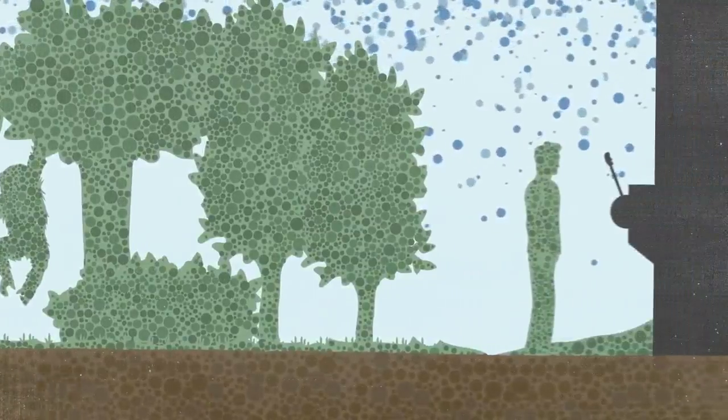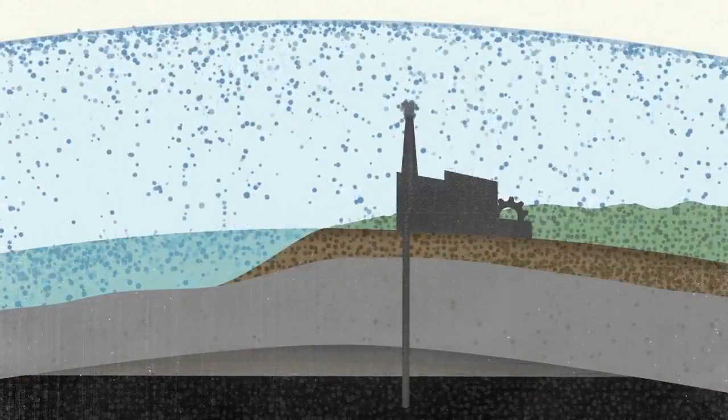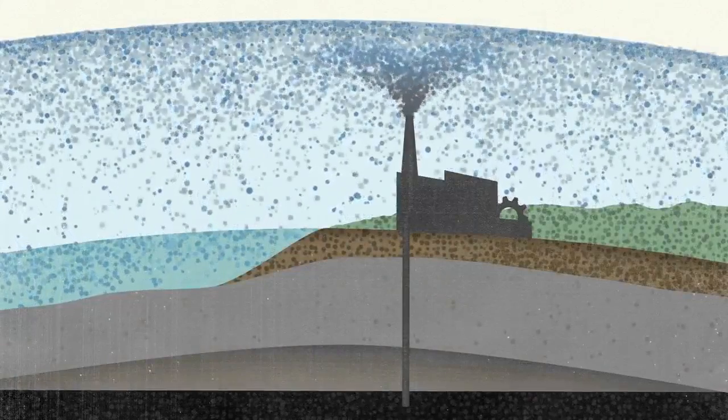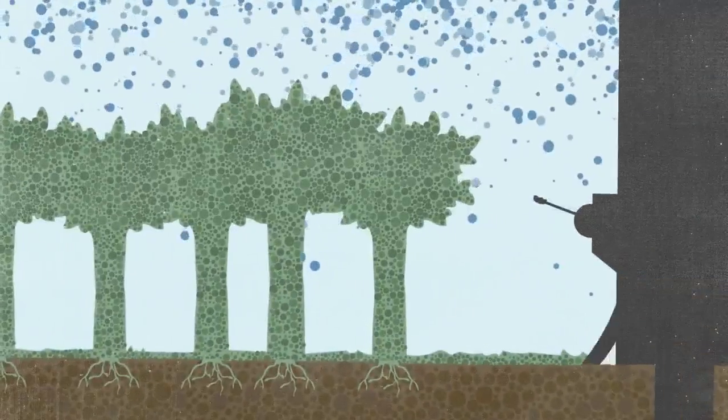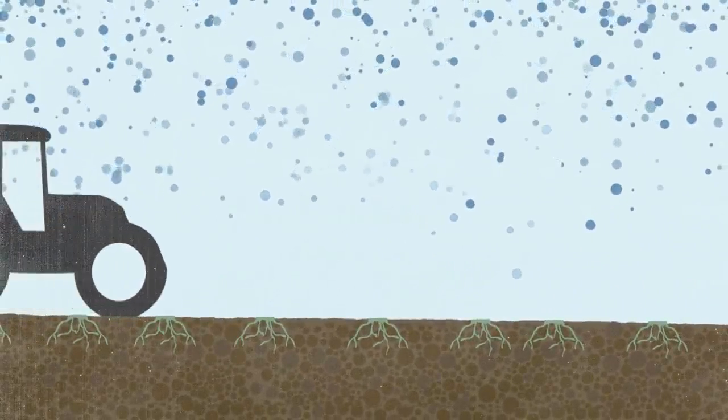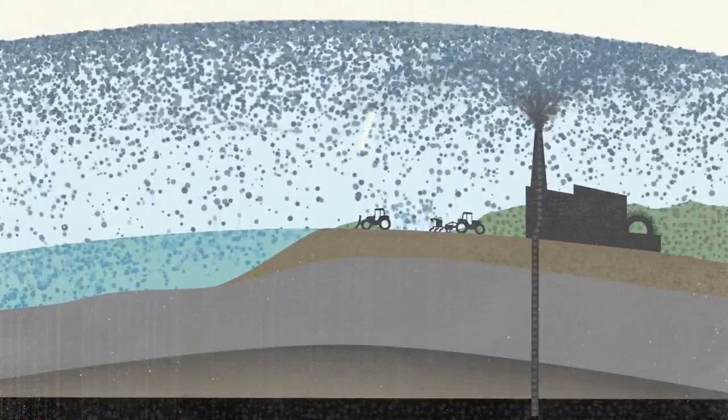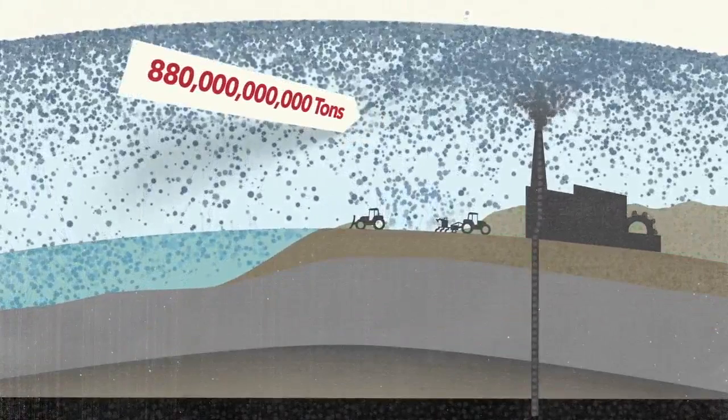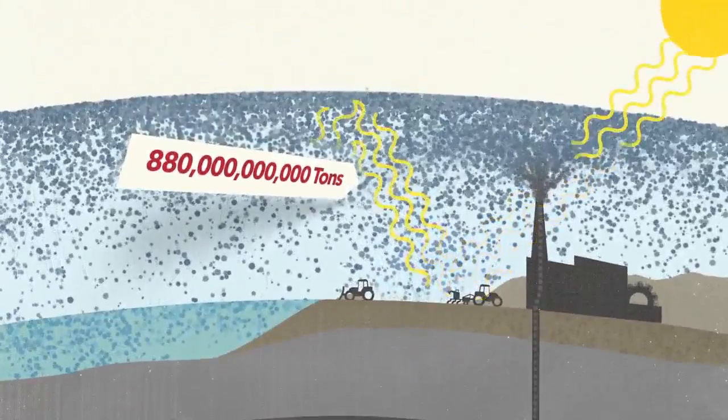Then one life form, that would be us, figured out how to extract carbon from the fossil pool, which was pretty much a time-out zone for carbon. We've been burning it for energy, putting it into play and disrupting that balance. The way we manage land and do agriculture is moving even more carbon into the atmosphere. Specifically, we've moved 880 billion tons of carbon dioxide into the atmosphere, which is heating up the planet and destabilizing our climate.